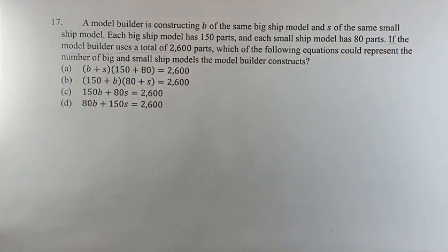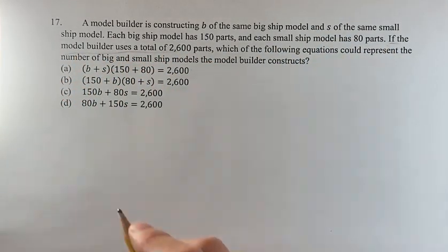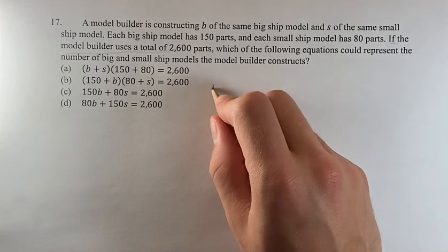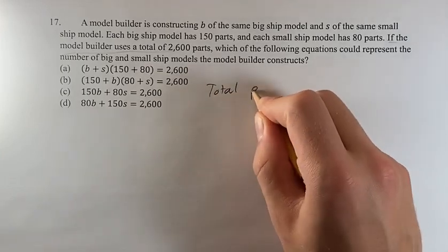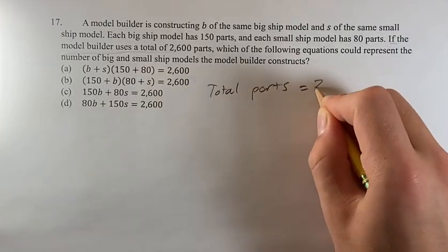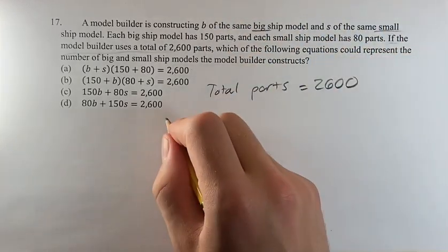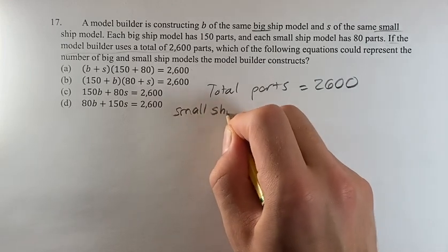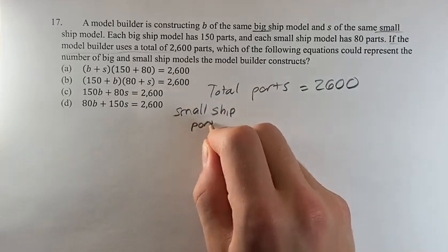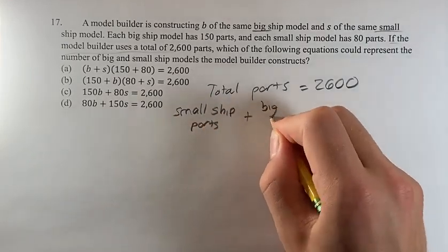So we note that this model builder is making ships and all of the ships use a total of 2,600 parts. That's going to be our starting point. So he makes big ships and small ships, so small ship parts plus big ship parts is going to equal that 2,600.